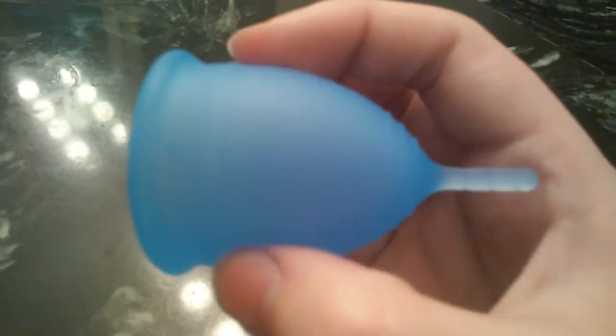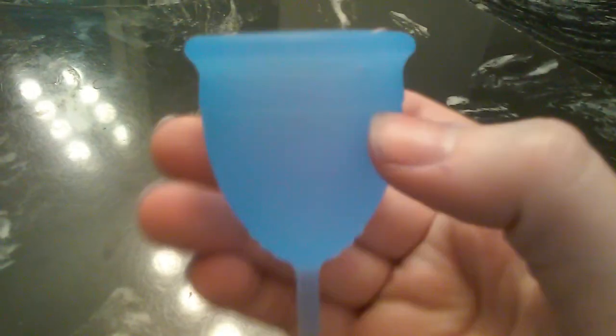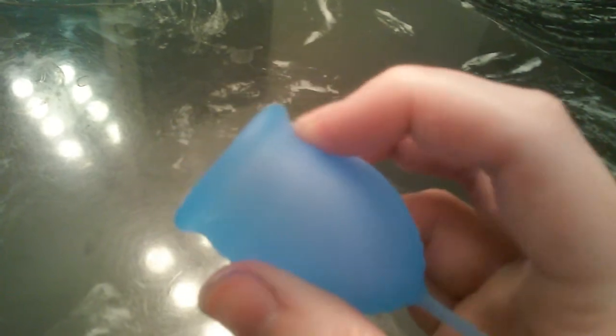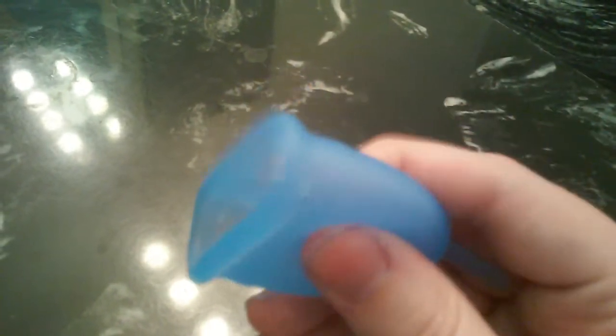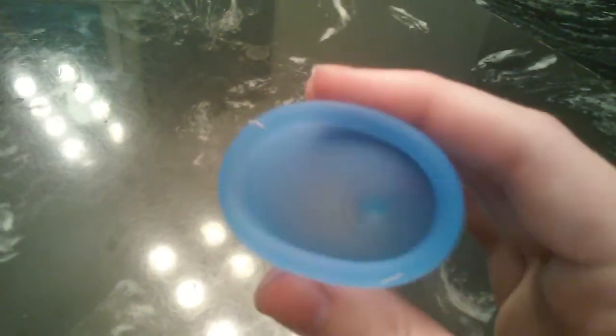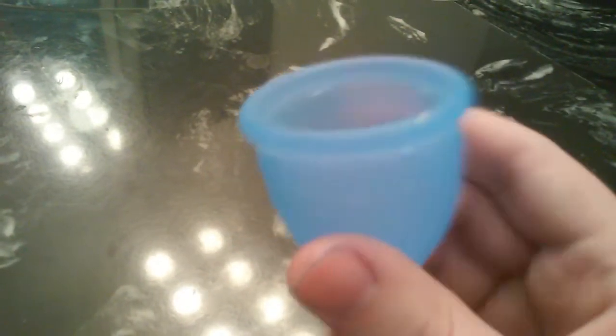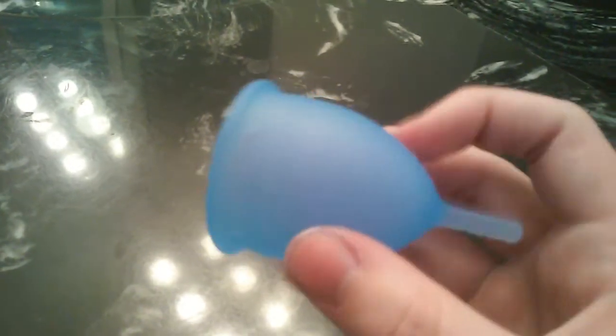This cup has four suction release holes as you can see around the side. It has a bell shape. It has a slight ridge near the rim to help, I think that's to help it pop open but I'm not sure. And it has I'd say a medium firmness and the firmness is similar throughout the menstrual cup. If anything the top might be a little softer than the bottom but they feel pretty similar.